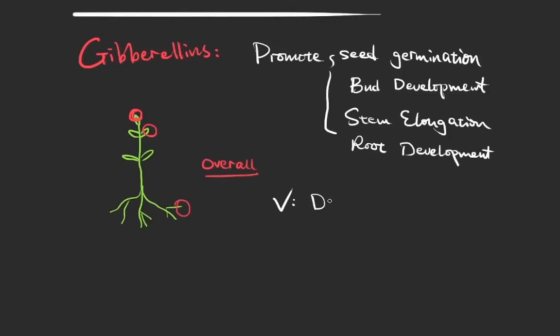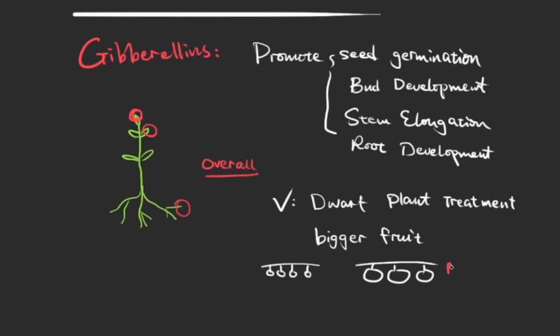In commercial applications gibberellins can be very useful in treating dwarf plants and can also produce bigger fruits by elongating those fruit stems so each fruit has a bigger room to grow. And who does not like bigger fruits?